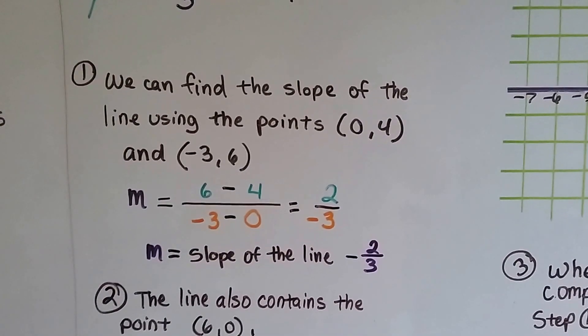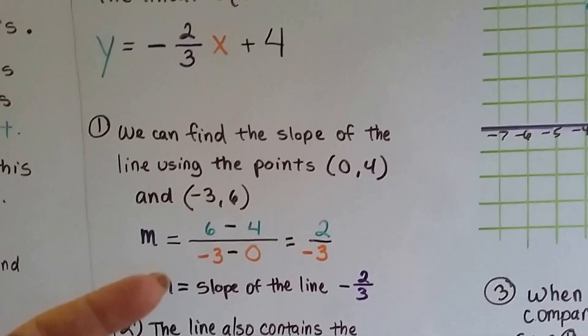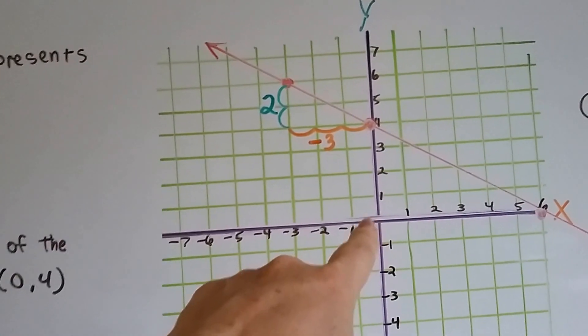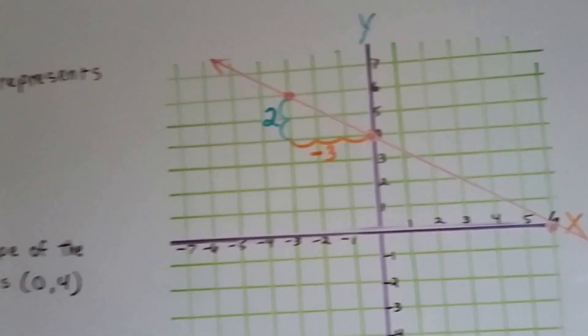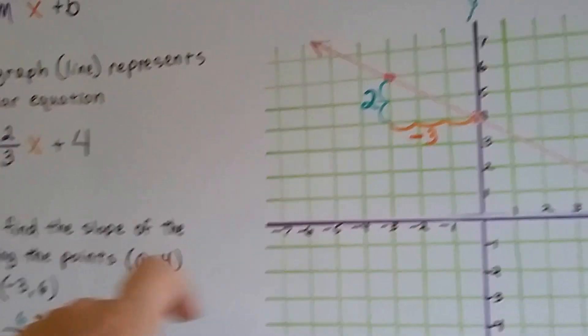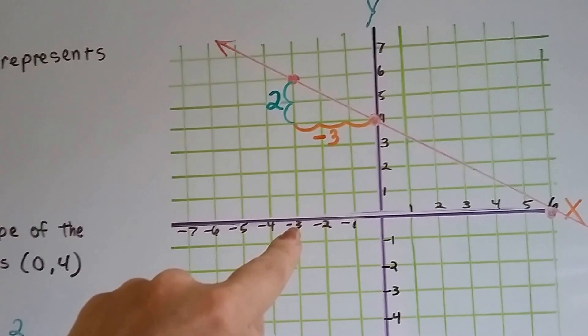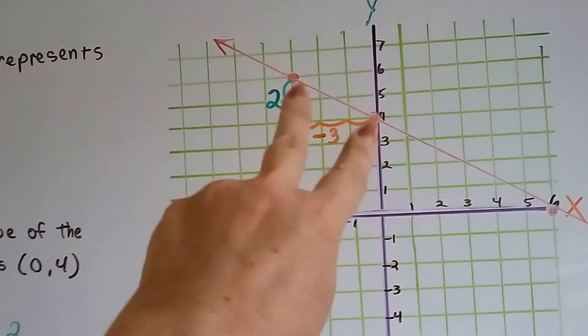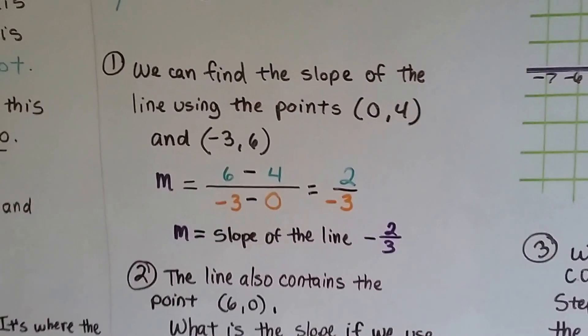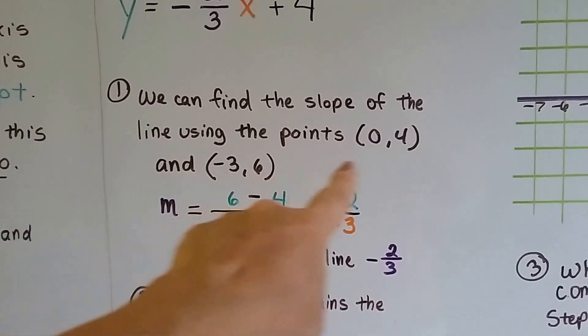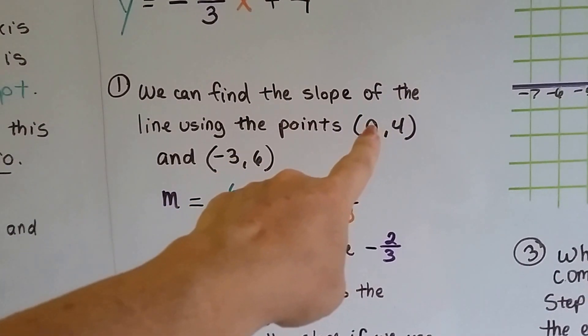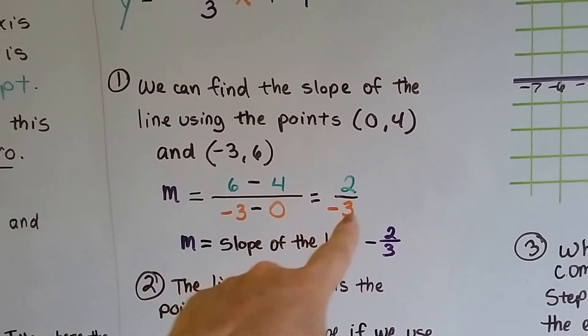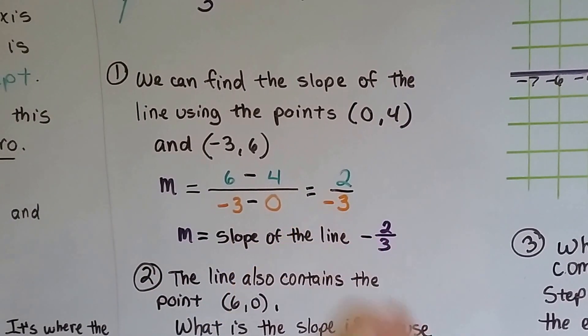We can find the slope of a line using the points (0, 4) and (-3, 6). So here's the 0, 4. We're at 0 on x. That puts us right on the y's line. And y is on 4. Our next coordinate is negative 3, 6. So we go to x to negative 3 and we go up to 6. It's right there. So here's our two points. We can find the slope of the line using those two points. We take the second y, 6, and we subtract the first y, 4. 6 minus 4 is 2. We take the second x, negative 3, and we subtract the first x, 0. Negative 3 take away 0 is negative 3. That gives us a slope of negative 2 thirds.